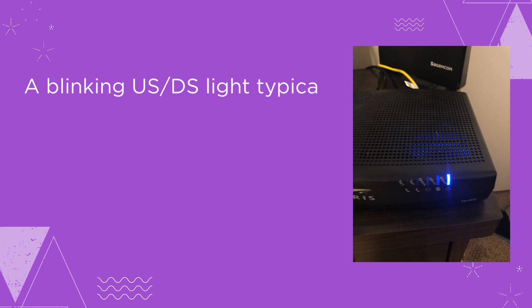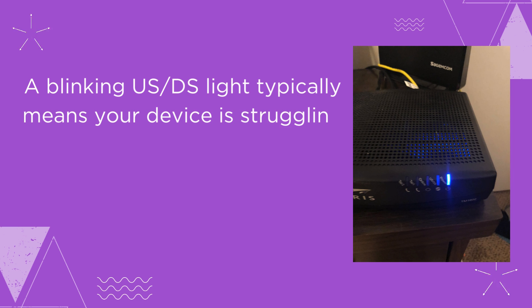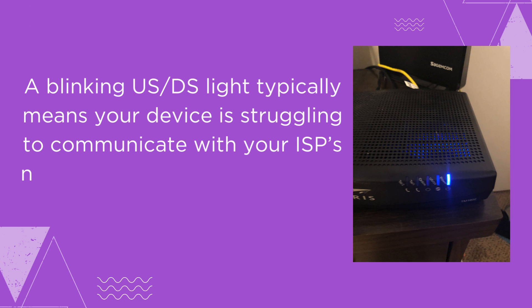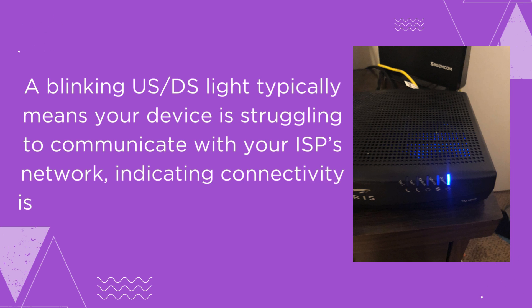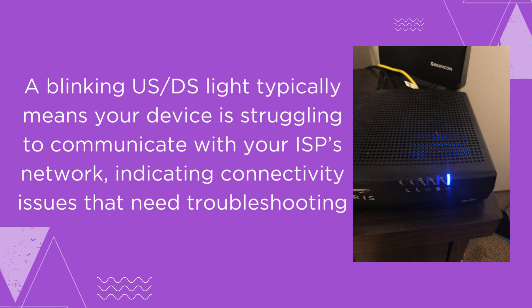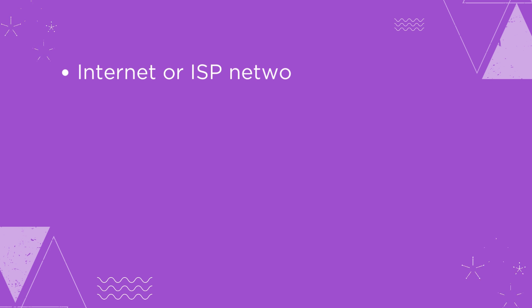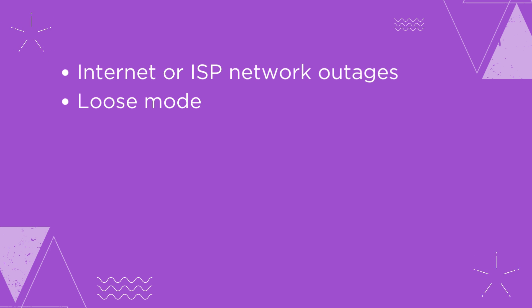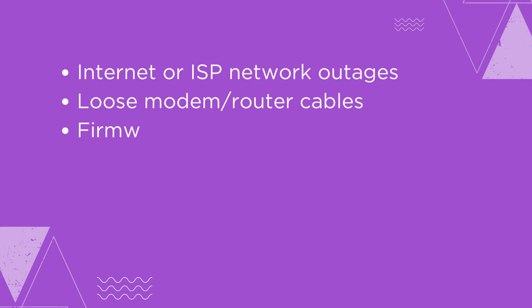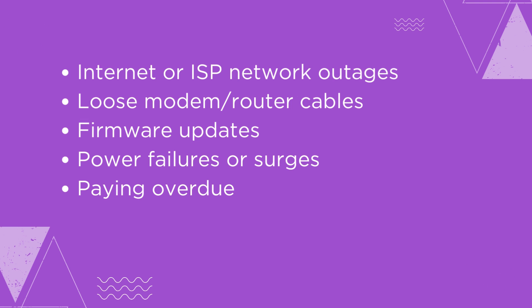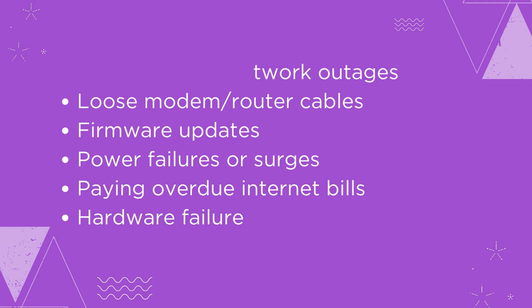A blinking US-DS light typically means your device is struggling to communicate with your ISP's network, indicating connectivity issues that need troubleshooting. Common causes include internet or ISP network outages, loose modem or router cables, firmware updates, power failures or surges, overdue internet bills, and hardware failure.